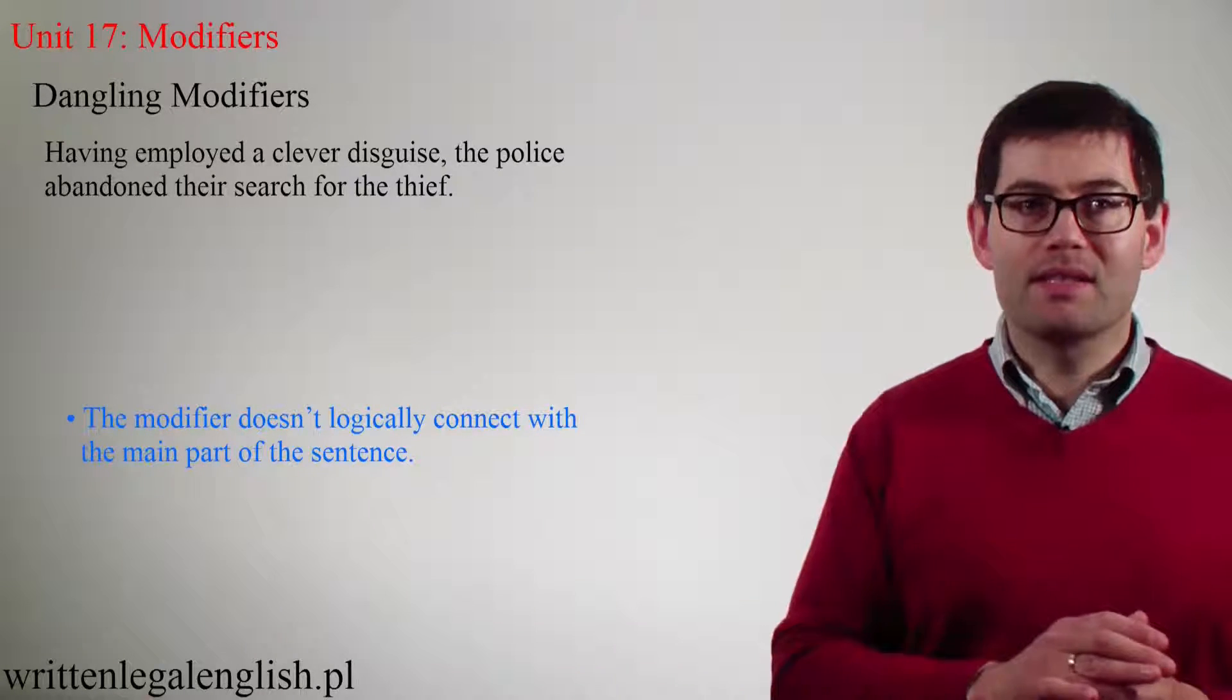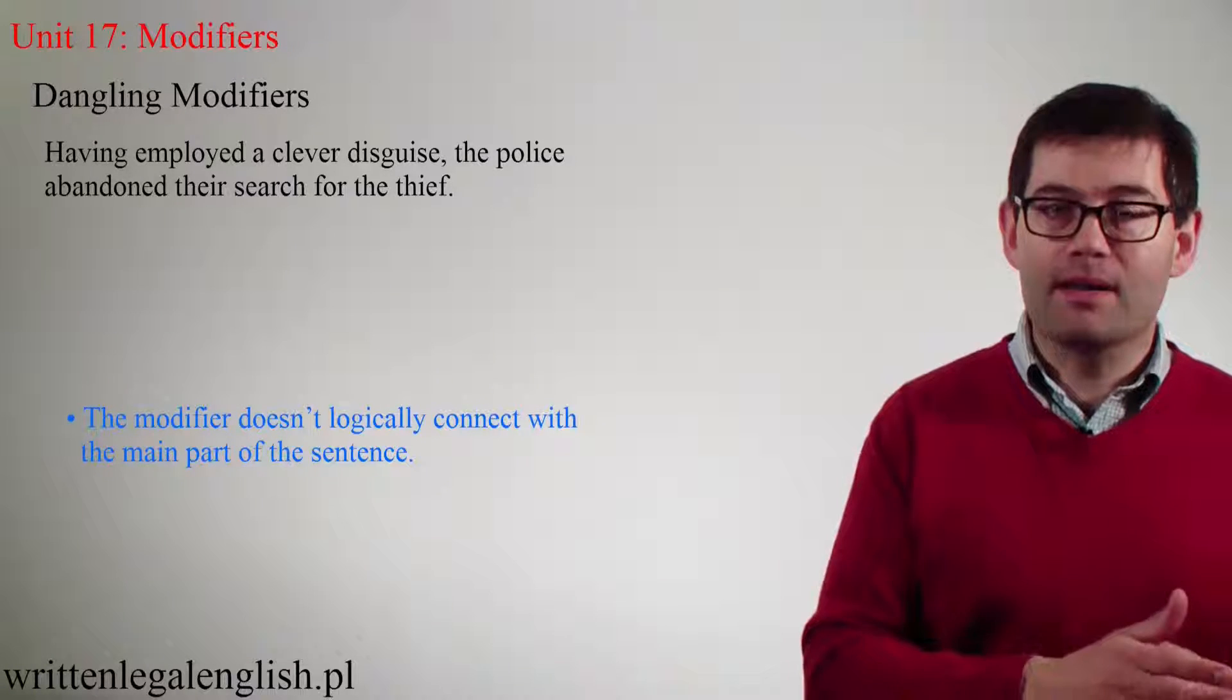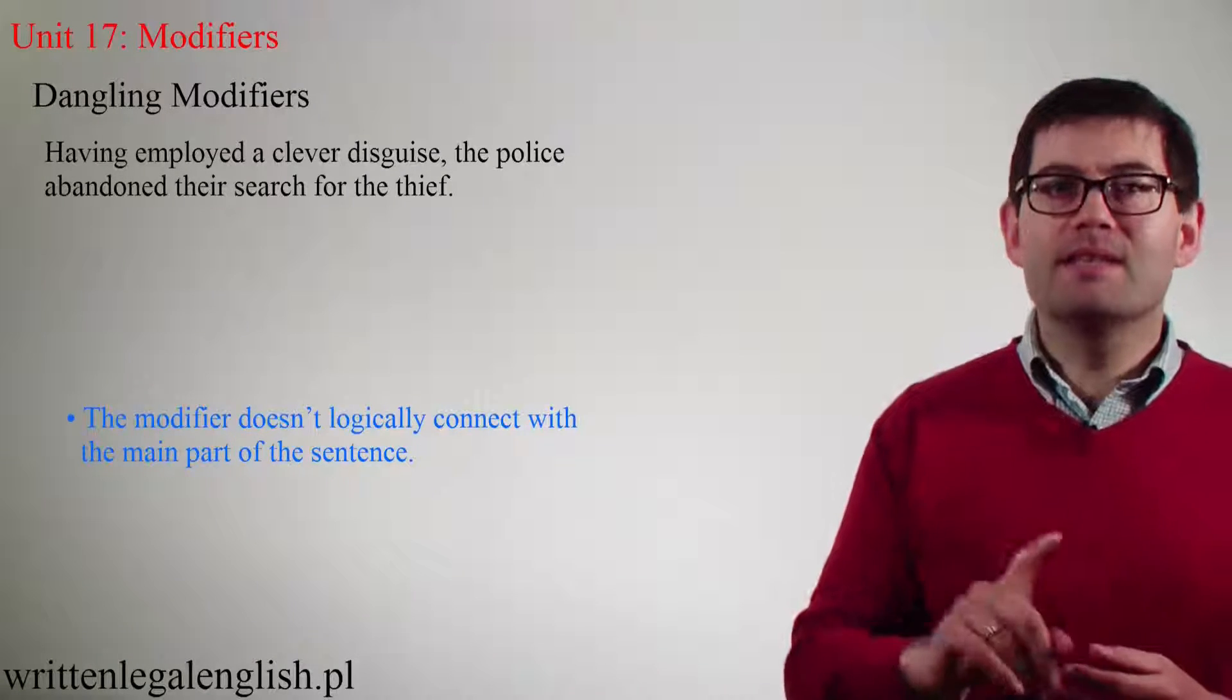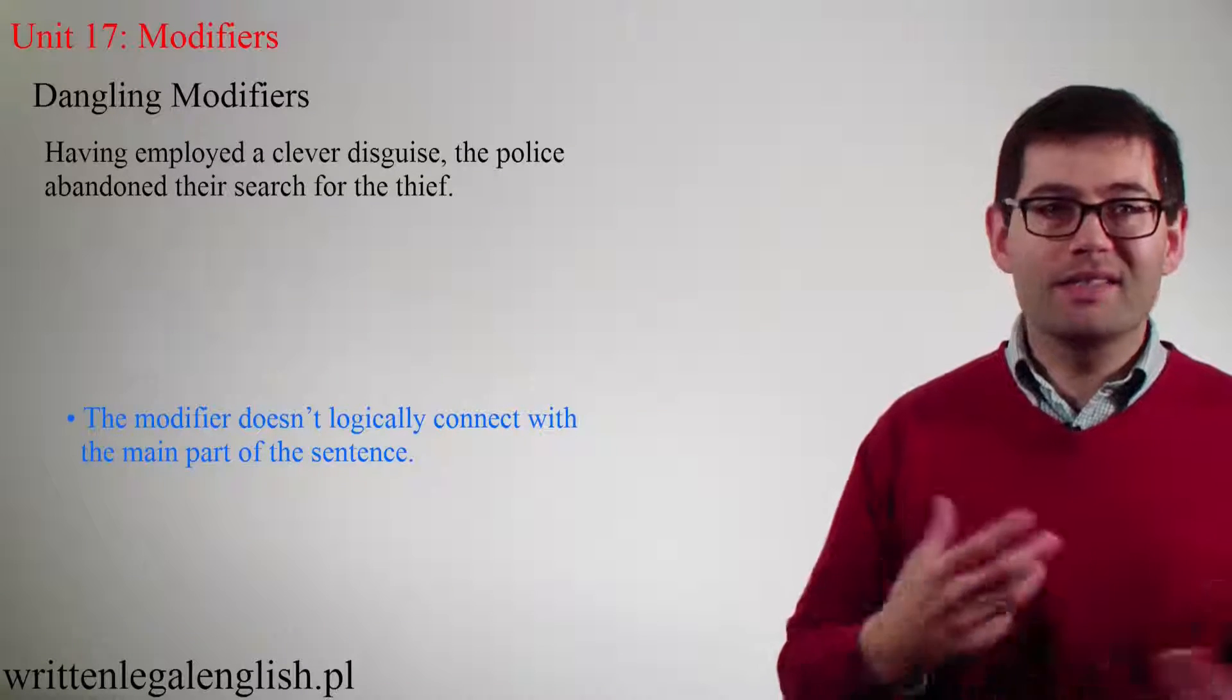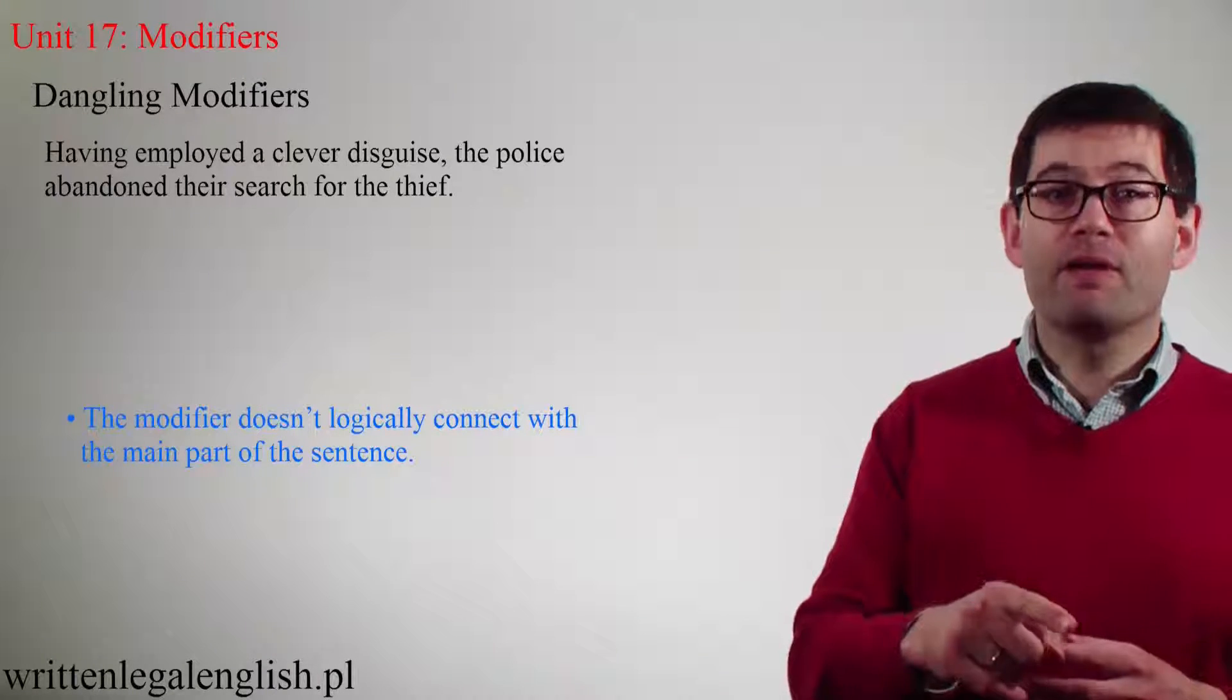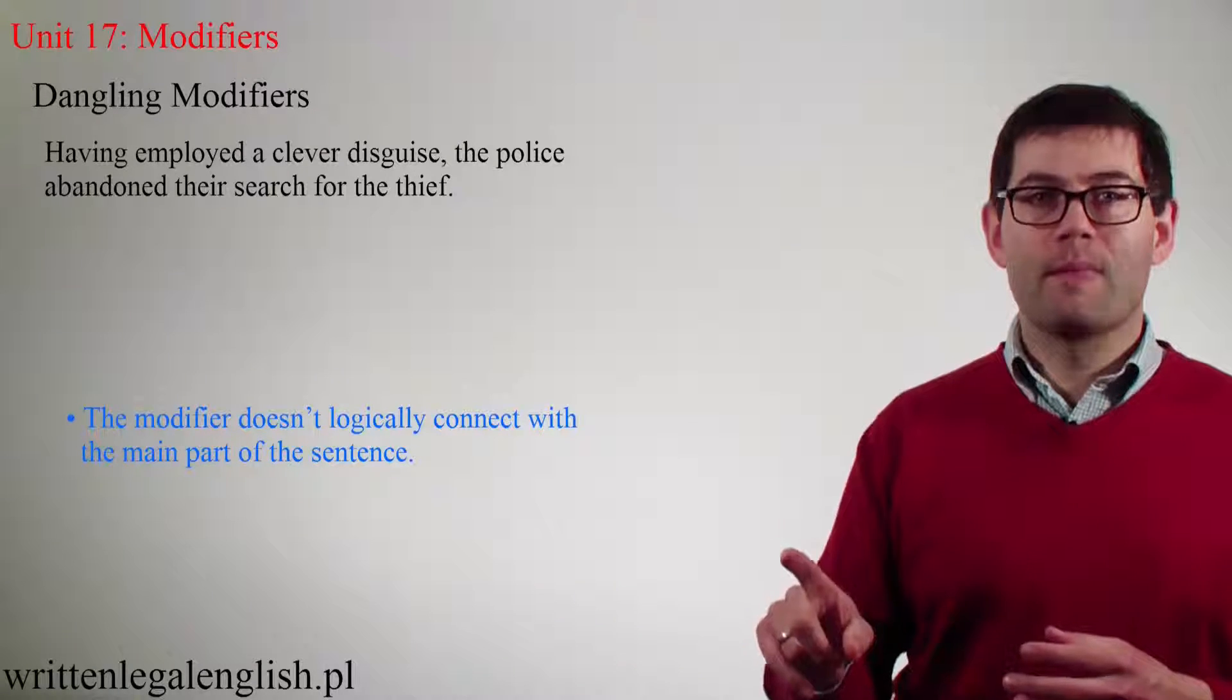In the example sentence, the dangling modifier is, having used a clever disguise. The bit that follows, then, says, the police. This logically leads us to believe that the police used the clever disguise, which doesn't make a great deal of sense. If we read further, we find out that there is a thief. Aha! The thief used the clever disguise.